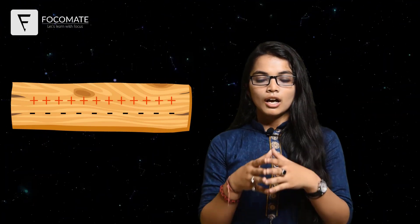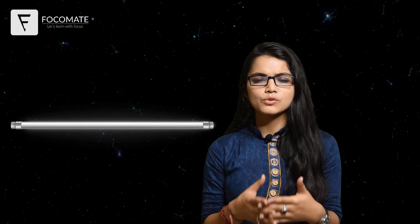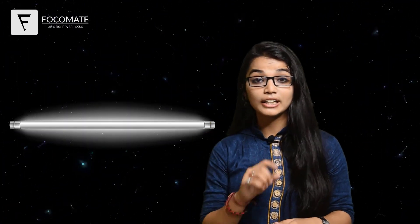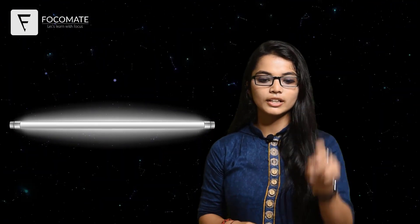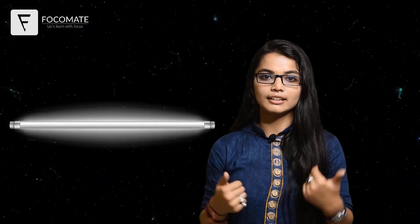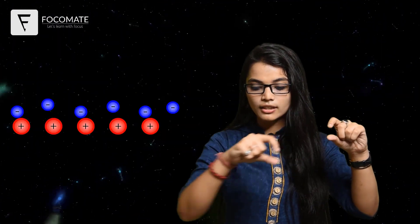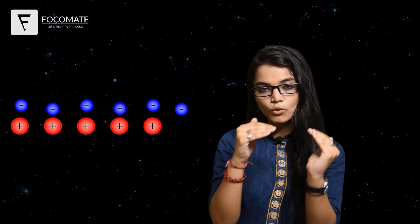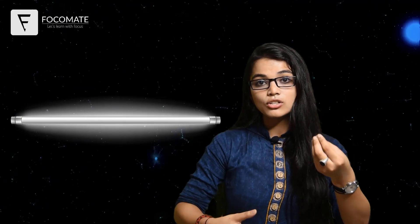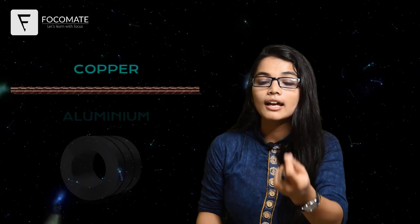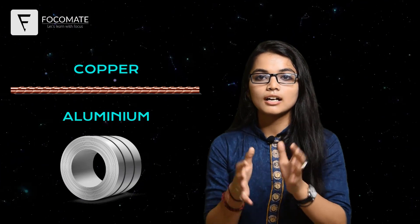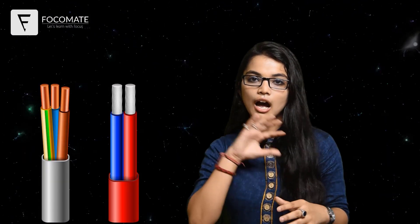Take the example of a tube light, which is very common. When we switch on a tube light, we get light. How? Because electrons are moving in one direction — negatively charged electrons are moving in one direction and we are getting light. This also happens with the help of copper and aluminium, which are both metals.